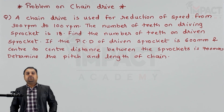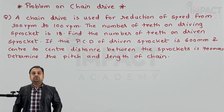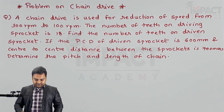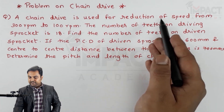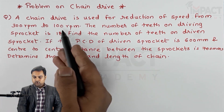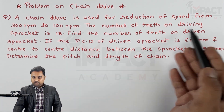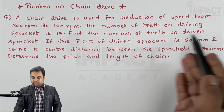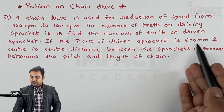In this video we are going to see a problem based on chain drive. A chain drive is used for reduction of speed from 300 rpm to 100 rpm. The number of teeth on the driving sprocket is 18. Find the number of teeth on the driven sprocket.